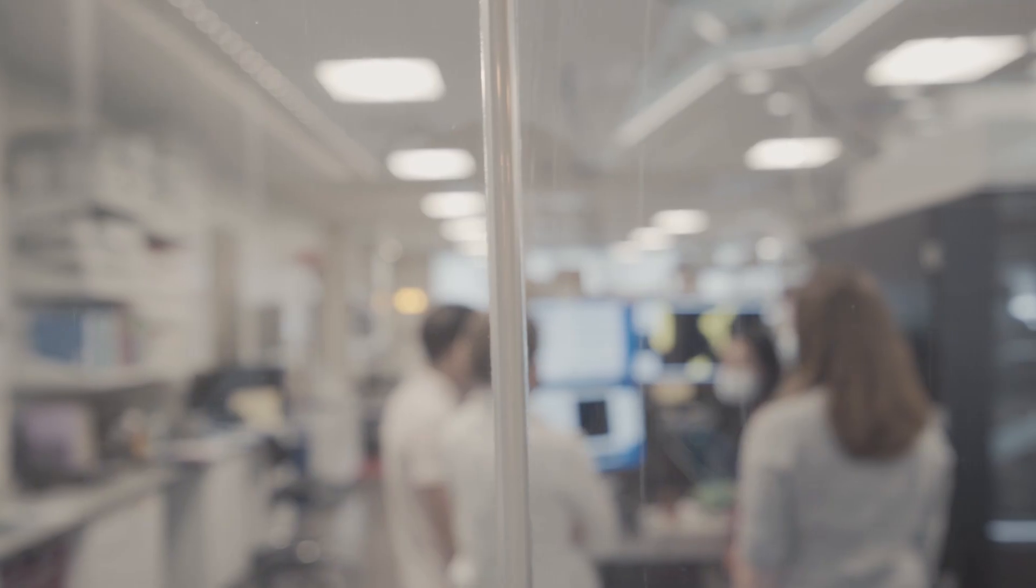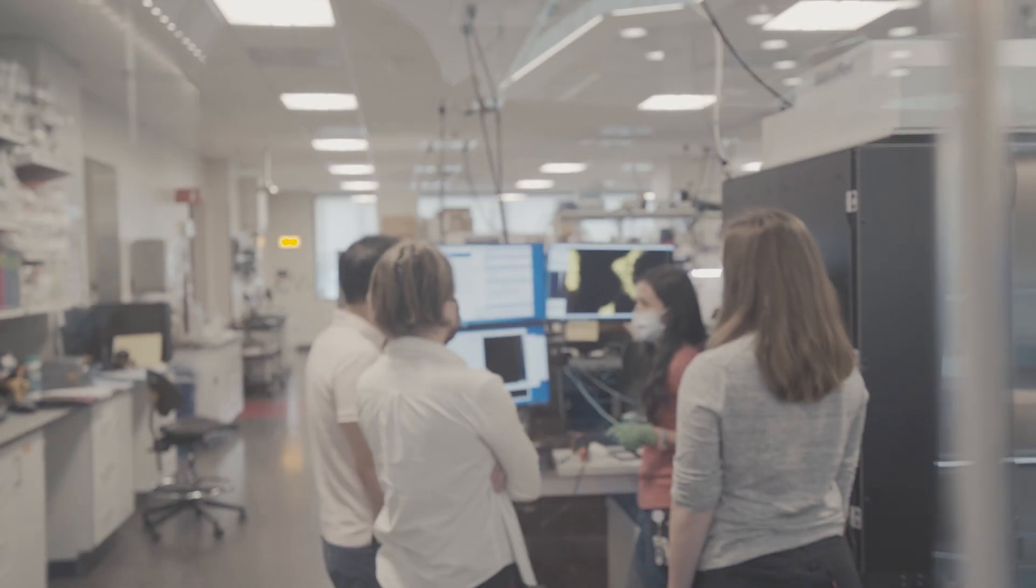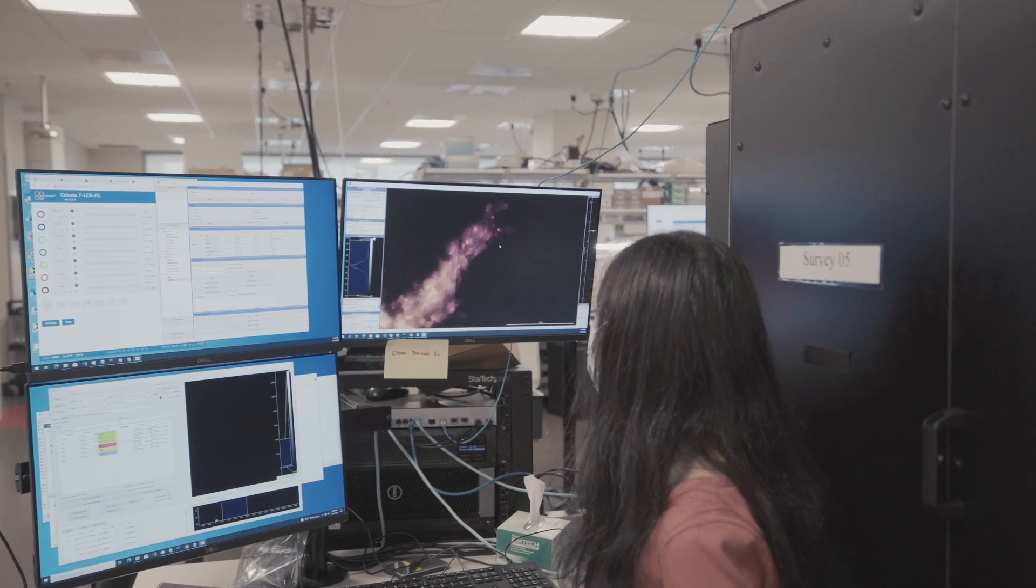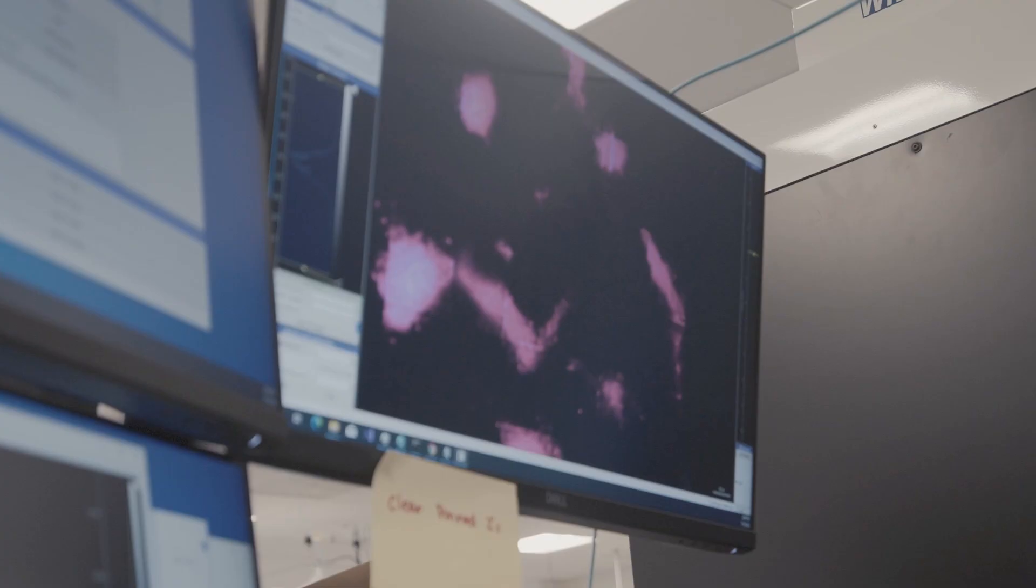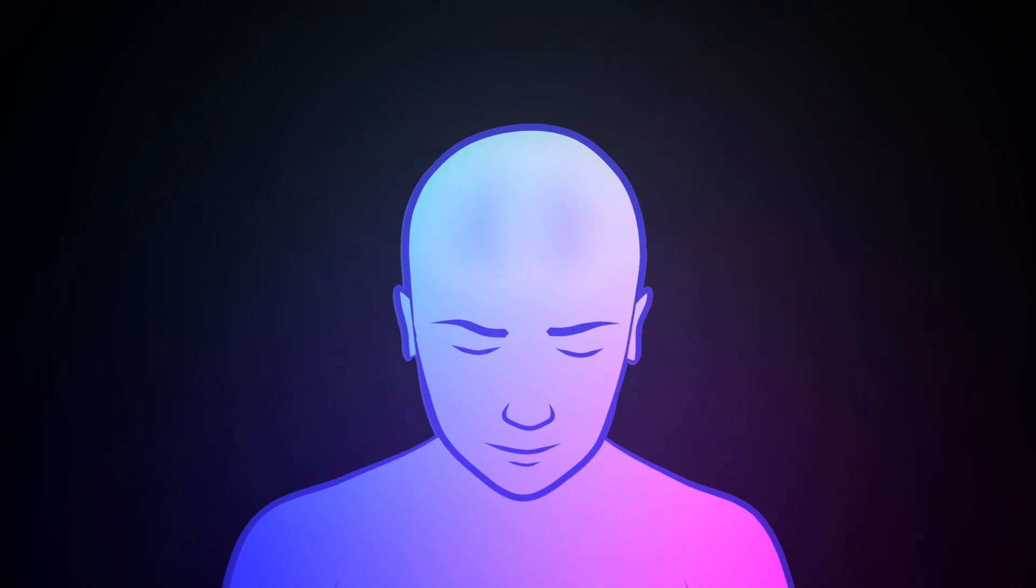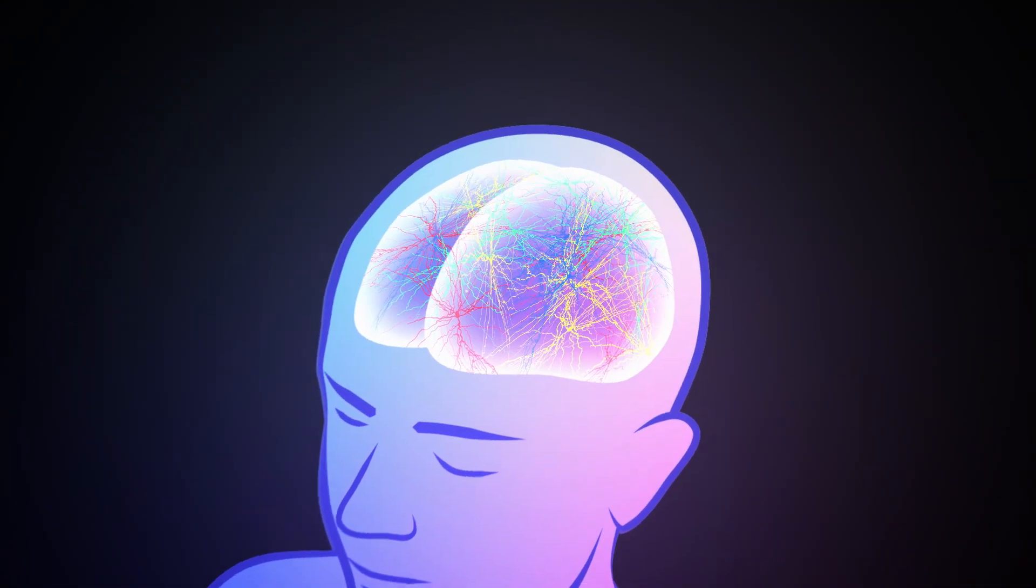If one looks in any other organ, diseases are typically diseases of particular types of cells in those organs. There's every reason to believe that this is the case in the brain as well. We now have the tools to finally look at this level of resolution and try to address that very question: what kinds of cells are affected by disease or are causal for a disease? And it turns out that there are several types of cells that seem to be selectively vulnerable.